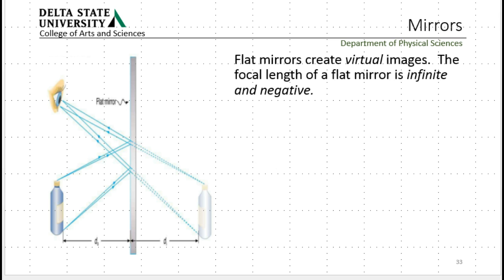Flat mirrors like the one shown here, the one you have in your house, create virtual images. They also have a focal length that's infinite and negative. What do I mean by that? Well, if you trace a ray straight into this mirror it bounces straight back out. So parallel lines hitting a flat mirror remain parallel, which puts the focal point off at infinity.